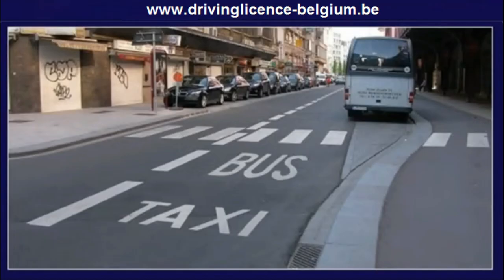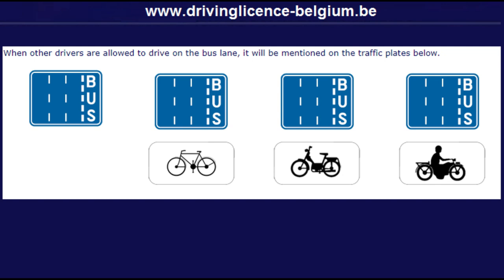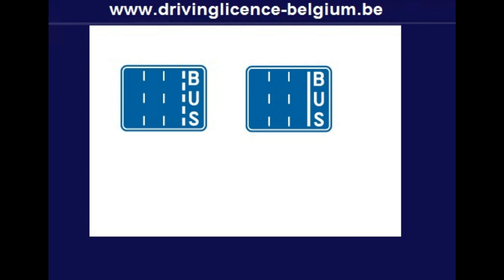Other drivers. When other drivers are allowed to drive on the bus lane, it will be mentioned on the traffic plates below. Difference between two traffic signs: the first traffic sign with the broken white line equals bus lane. You will learn the meaning of the second traffic sign with the continuous white line in Lesson 24.